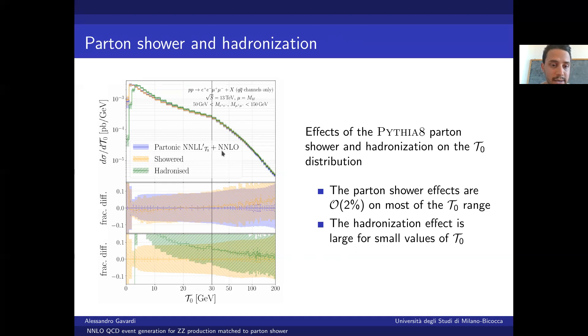The yellow and green curves are those obtained after Pythia8 and hadronization respectively. We know that both parton shower and hadronization do not preserve the NNLL prime precision, so we need to check numerically whether their effect is big or small. Indeed we can see that the parton shower effect is quite small over most of the tau0 range, while this is not the case for hadronization, which has instead a quite big effect, especially in the small tau0 region.